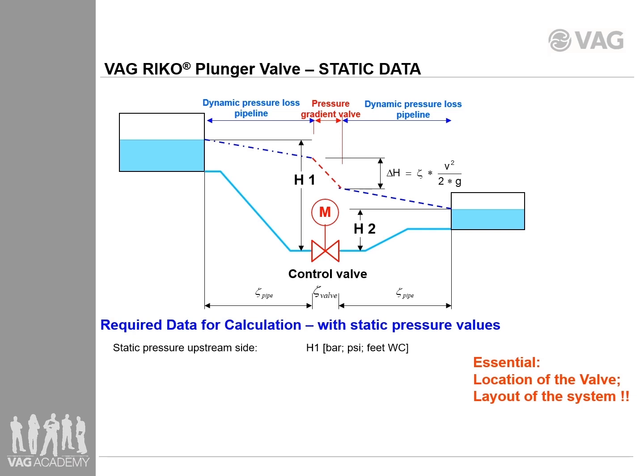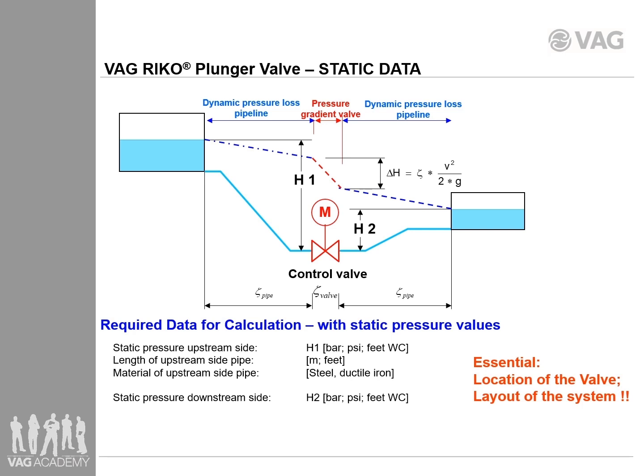You need the pipe size and the zeta value for the pipe to calculate the head loss. If the zeta value is not known, you will need the pipe length and the pipe material to calculate that through our head loss calculation program. For the downstream side, you will need the same information: the downstream pressure H2, the pipe size and the zeta value. And if you don't have the zeta value, you need the pipe length and the pipe material of the downstream pipeline.